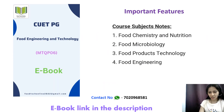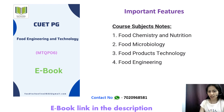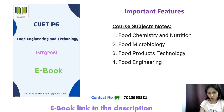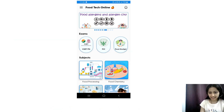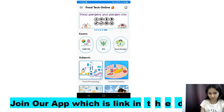Before starting, FoodTechOnline has launched an eBook for CUET PG Food Engineering and Technology. This eBook will cover all four sections: food chemistry and nutrition, food microbiology, food products and technology, and food engineering. It covers your entire syllabus in a precise manner, and the link is given in the description box. You can also install our app for more practice questions — the link is in the description.